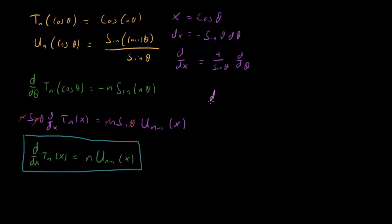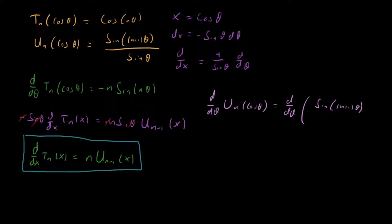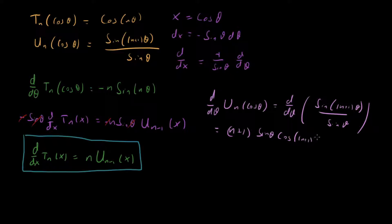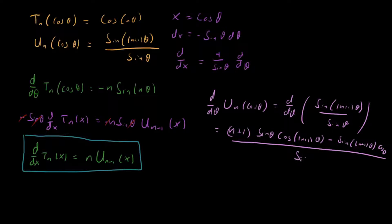Now let's do the exact same thing with the polynomials of the second kind. We look at d/dθ of U_n(cosθ), which means taking d/dθ of the quotient sin((n+1)θ)/sinθ. We need to apply the quotient rule, giving us: [(n+1)sinθ·cos((n+1)θ) − sin((n+1)θ)·cosθ] / sin²θ.